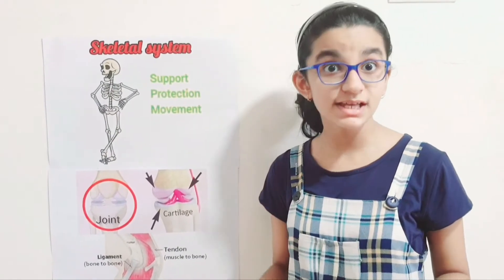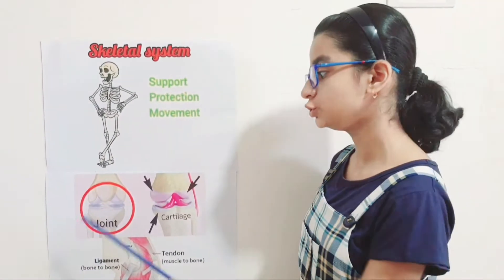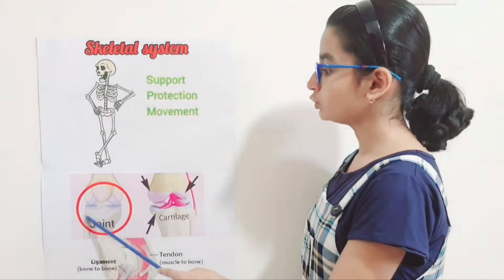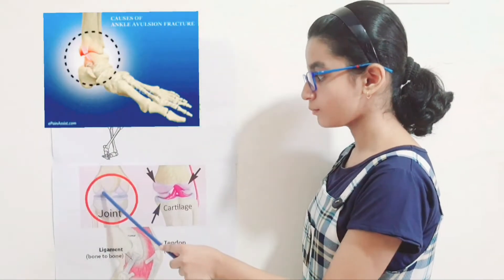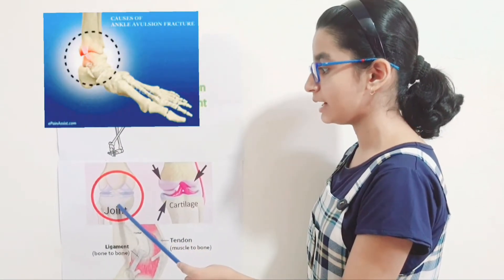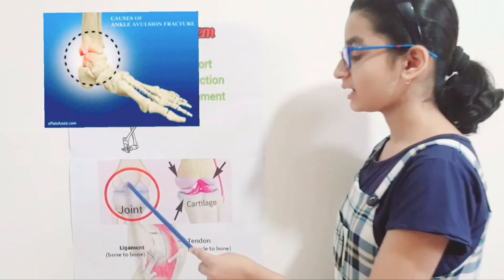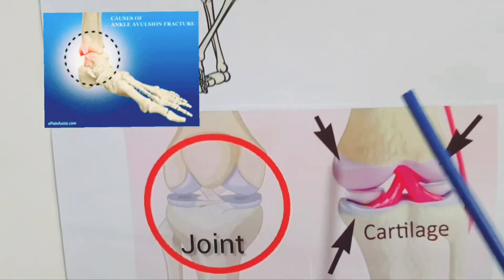There are 206 bones in the human body. Joints are the places where two or more bones meet to allow movement. There are 100 joints in our body.